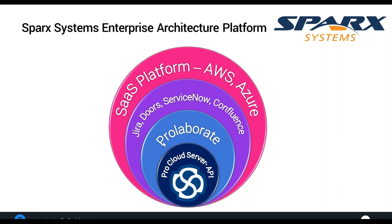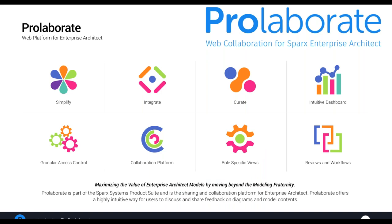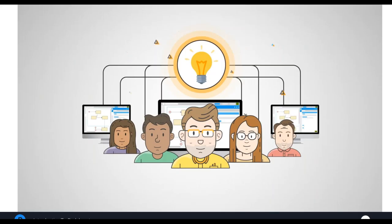The focus of this webinar is primarily Prolaborate and the four use cases that drove it. There are many core features customers get excited about: simplify, integrate, curate, dashboards, collaboration, etc. But rather than a feature-specific overview, I'm focusing on the customers and users who really ought to use the Enterprise Architect models we create — and what we can do to take these models to those users to maximize the value of our modeling efforts.